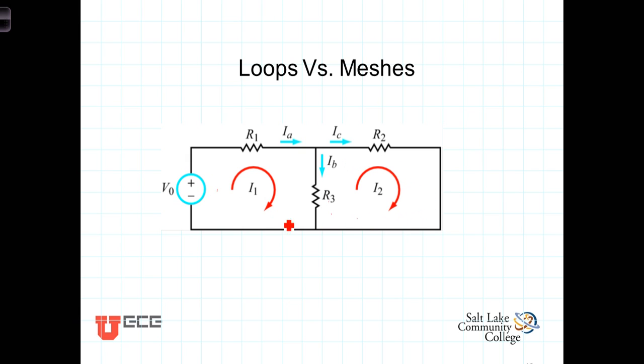Let us formally define a mesh now. A mesh is a closed path that contains no other closed paths within it. So in this case we have a mesh here, a mesh here, but this outer loop, because it contains two loops within it, does not qualify as a mesh.